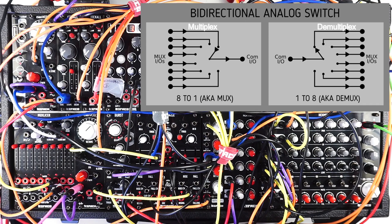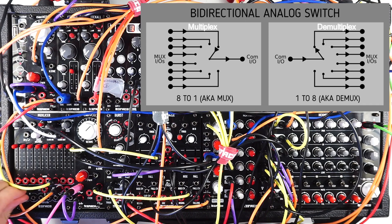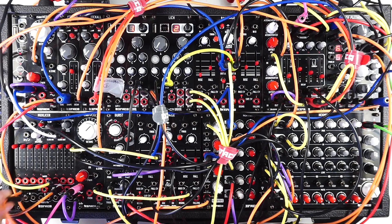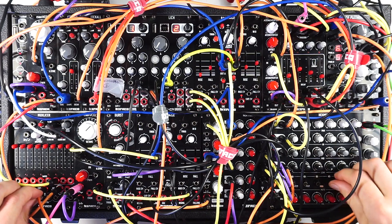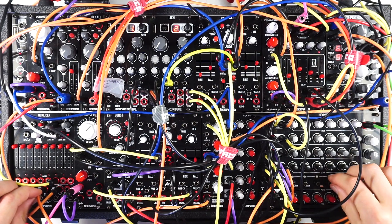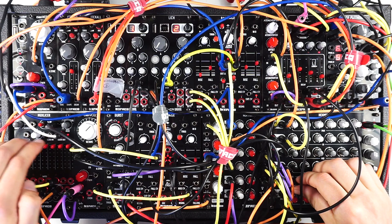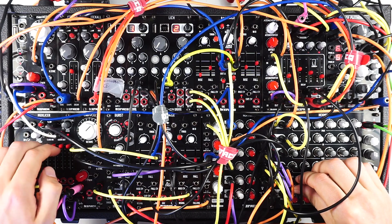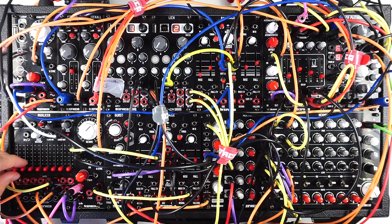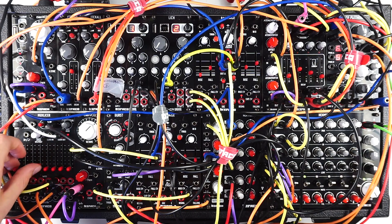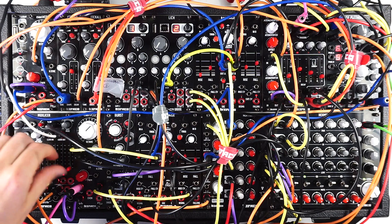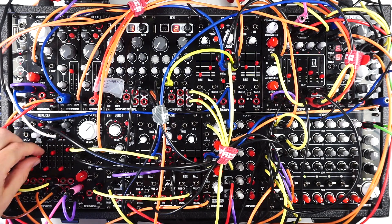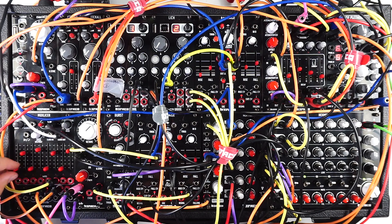To multiplex, send a signal into any of the MUX IOs or into the all-in — this signal will then route to the common IO. In all of our patch examples, we have sent a snare triggered on every step into the all-in. When multiplexing or demultiplexing, faders behave as step volume control. This is a particularly unique feature: using the faders, we can silence or raise the volume of our multiplex signal for any given step.